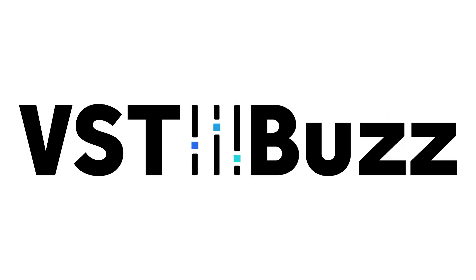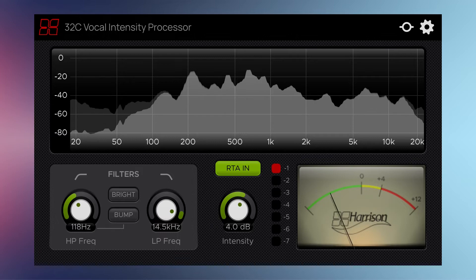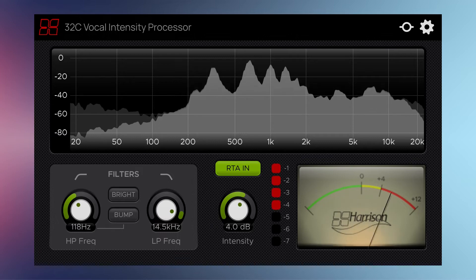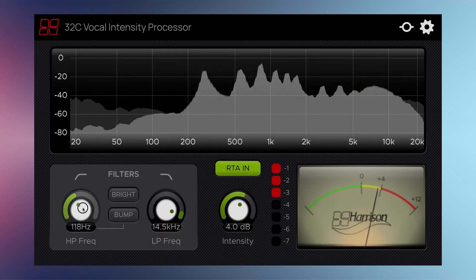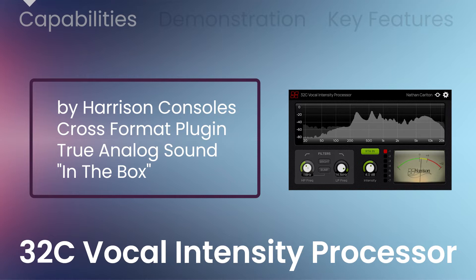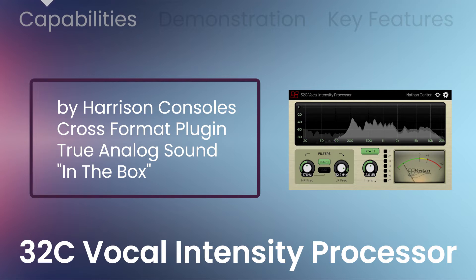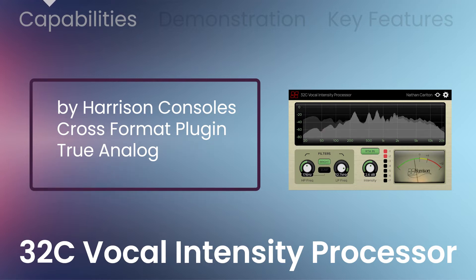VST Buzz presents 67% off the 32C Vocal Intensity Processor by Harrison Consoles — a cross-format plug-in that brings Harrison's true analog sound to your digital audio workstation, and will change the way you think about mixing in the box.